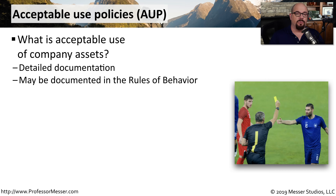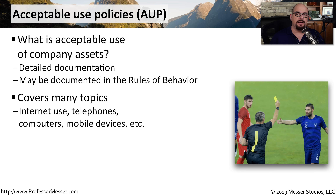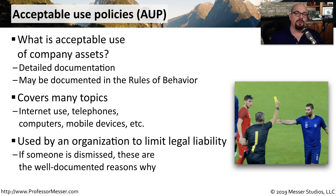There are also a set of rules that we create for our own organizations that regulate how people use technology. These are Acceptable Use Policies, or AUPs, and they're usually detailed in an Employee Handbook or an Employee Rules of Behavior. The Acceptable Use Policies cover how we use technology — topics such as how telephones are used, mobile devices, the computers on our desks, and the internet access that we use. These AUPs are used by an organization to protect themselves. If someone is dismissed, they can refer back to the AUPs to show a well-documented breakdown of why someone was told to leave the organization.